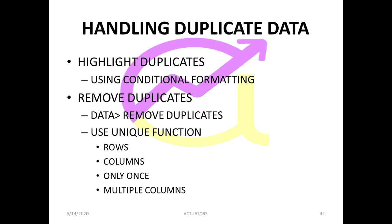So here we have two different methods. The first one is highlighting the duplicates, which we will do using conditional formatting — a very easy tool to use. The next method is to remove the duplicates completely from your data. For removing duplicates, I am going to use two different methods: the first is the Remove Duplicates feature in the Data tab, and the second is to use the UNIQUE function. I will now dive straight into the spreadsheet.